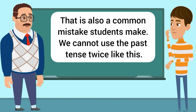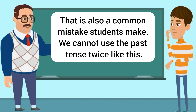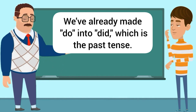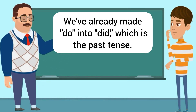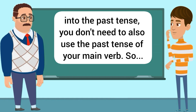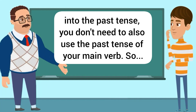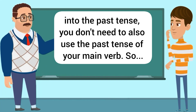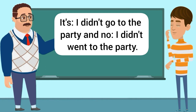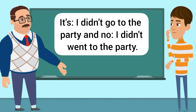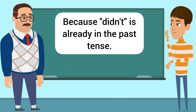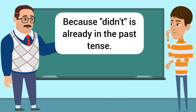We cannot use the past tense twice like this. Because we've already made 'do' into 'did,' which is the past tense. If you've already changed the helping verb into the past tense, you don't need to also use the past tense of your main verb. So it's 'I didn't go to the party,' and not 'I didn't went to the party,' because 'didn't' is already in the past tense.